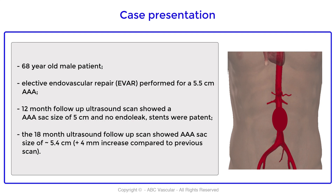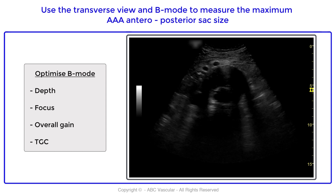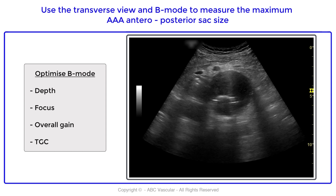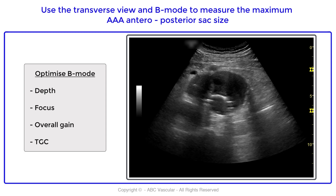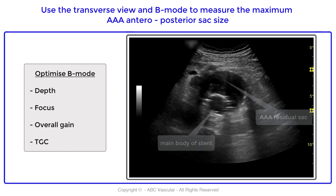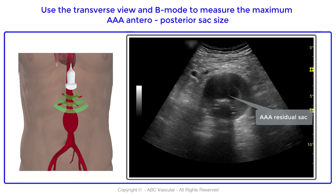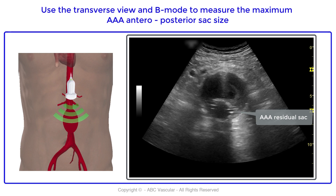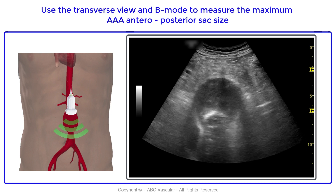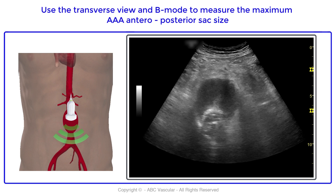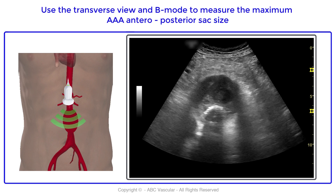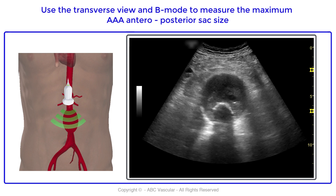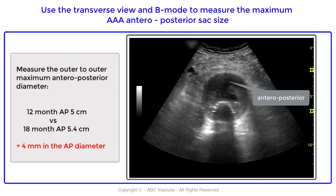The first step when examining an endovascular repair for abdominal aortic aneurysm is to perform a B-mode overview. We optimize all B-mode parameters and move the transducer across the aneurysm to identify visually the largest aortic diameter. Once identified, we freeze the image and measure the outer-to-outer maximum anterior-posterior diameter, which in this case measures 5.4 cm.